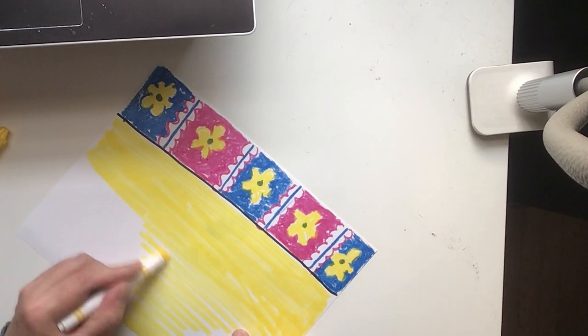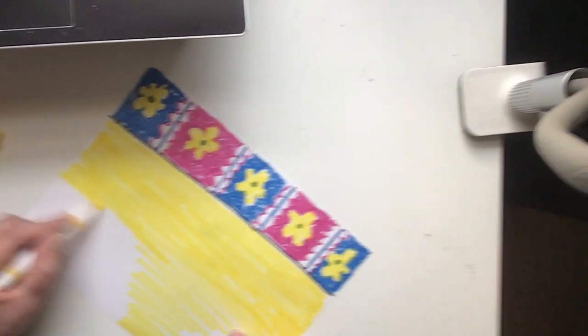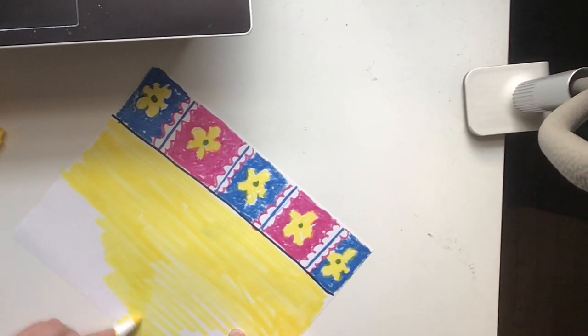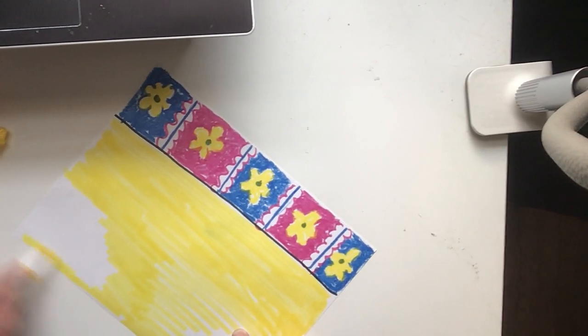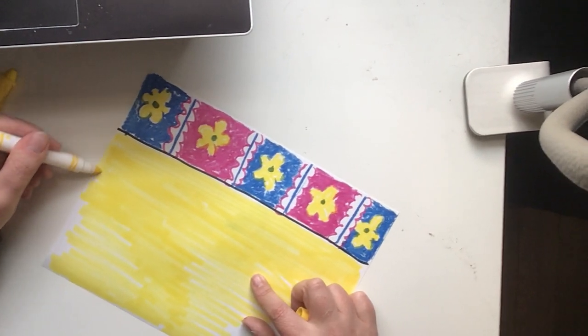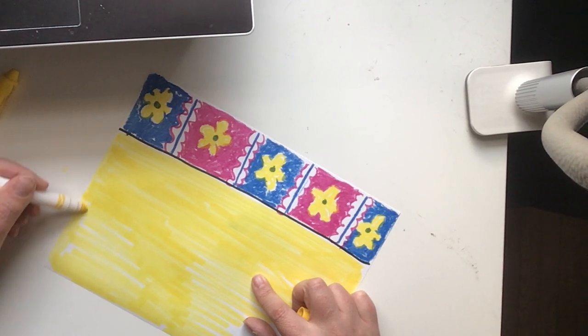It might look like I'm scribble-scrabbling, but I keep going in the same direction over and over again to make my marker lines neater. I might go in the opposite direction on the sides just to make sure that's all colored in.